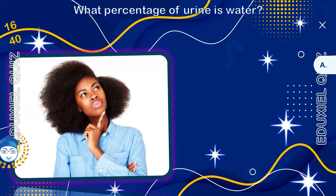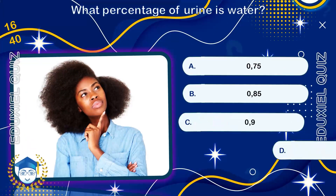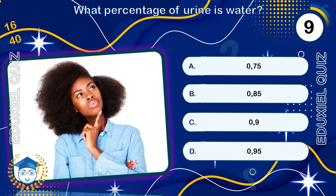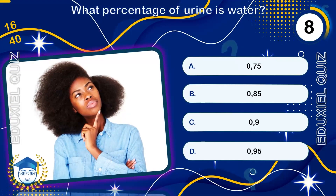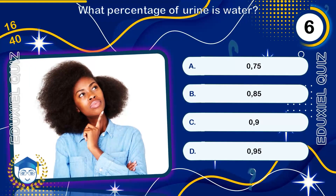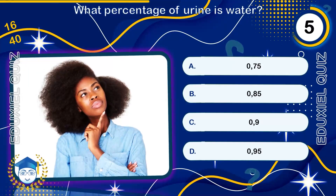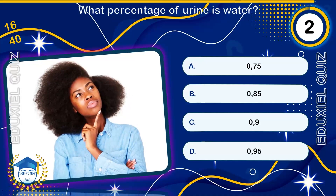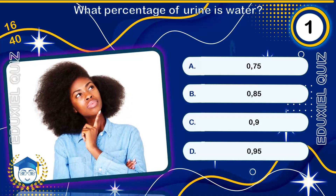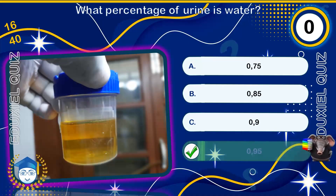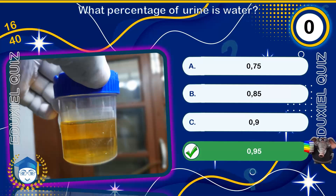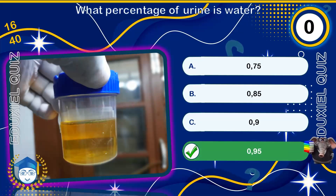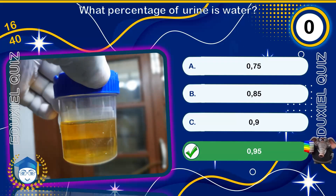What percentage of urine is water? 95%. The remaining 5% consists of metabolic byproducts, urea, salts, and hormones.